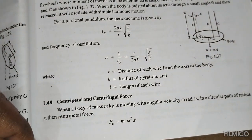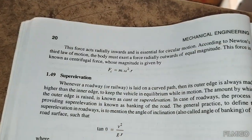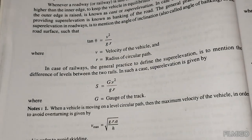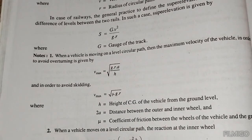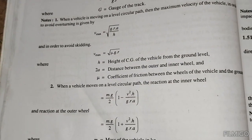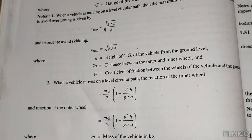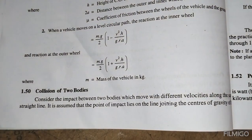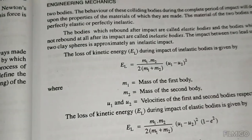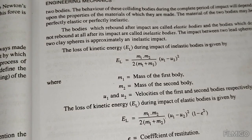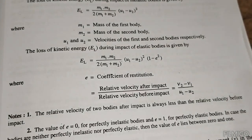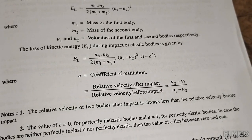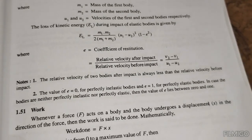Centrifugal force F_c equals m omega squared r. For circular motion of a vehicle, v_max equals square root of g r mu. For banking: tan theta equals v squared divided by g r. The reaction on inner and outer wheels of a vehicle is given by mg divided by 2 times 1 minus v squared h divided by g r a. For collision of two bodies, the kinetic energy formula involves m1 m2 divided by 2 times m1 plus m2 times u squared minus v squared.